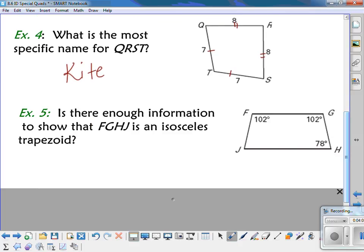For example 5, is there enough information to show that FGHJ is an isosceles trapezoid? Well, I know that my missing angle, I can just call it X, and I know that all the angles have to add up to 360 degrees. So if I solve for X, I set that equal to 360.